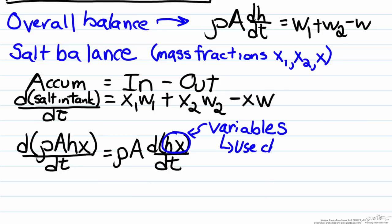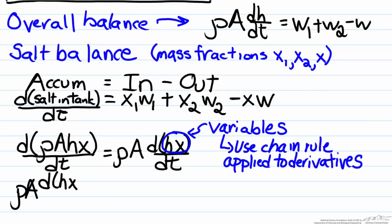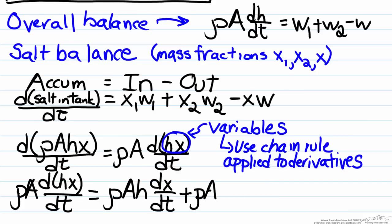In order to use the chain rule here, this term is now going to become two terms, one where the first variable inside the derivative is held constant, and one where the second term inside the derivative is held constant. Therefore our left hand side now becomes, we'll hold h constant first, so ρ A h dx/dt plus ρ A x multiplied by dh/dt.